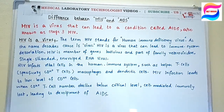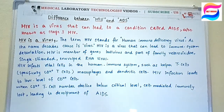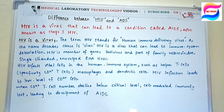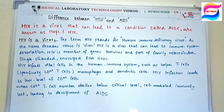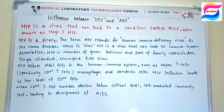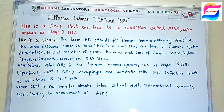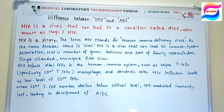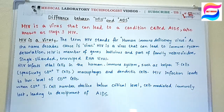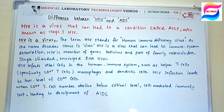HIV is a virus that leads to human immune system deterioration — it specifically targets and destroys the human immune system. HIV virus is a member of the genus Lentivirus and belongs to the family Retroviridae. By structure, it is a single-stranded, enveloped RNA virus. There is a classification based on single-stranded, double-stranded, enveloped RNA and DNA. HIV is single-stranded, enveloped RNA, part of the family Retroviridae and genus Lentivirus.